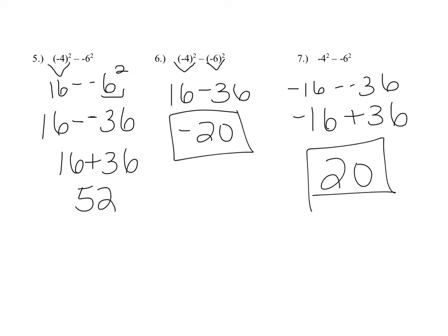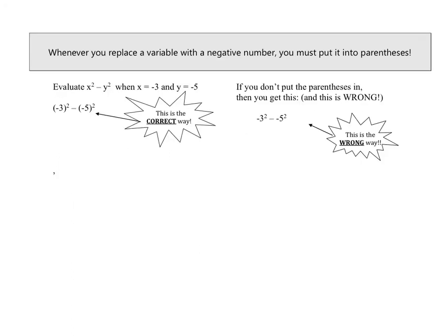This all might seem easy enough, but when it comes to evaluating expressions, we often forget these rules. Whenever you replace a variable with a negative number, you must always put it into parentheses. Evaluating means we are replacing variables in an expression with what they stand for. If your variable happens to be negative and there's an exponent on that variable, you have to put parentheses around the number you're replacing it with, or it will not be correct.